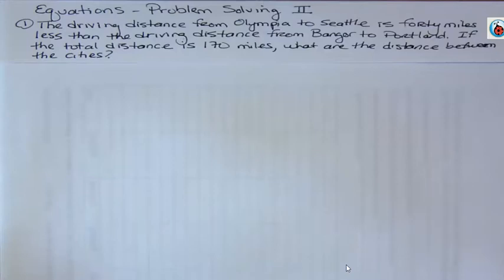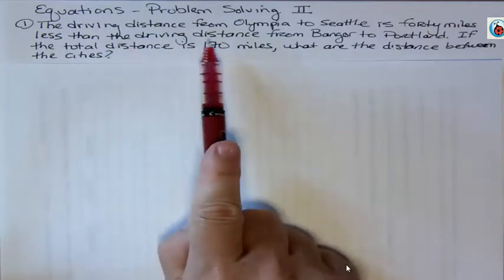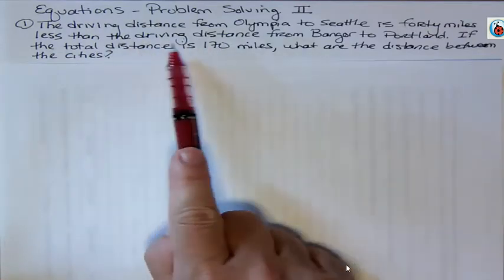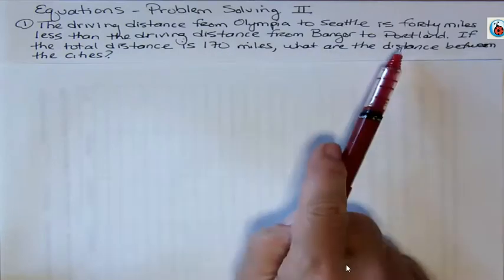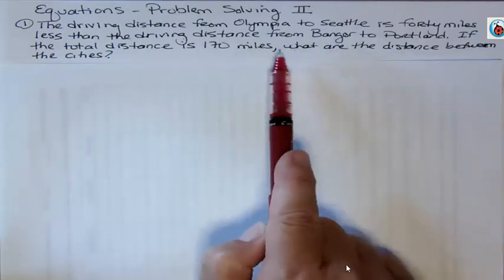Hello, it's Carly McAvoy. Today I'm doing problem-solving with linear equations. The first problem says the driving distance from Olympia to Seattle is 40 miles less than the driving distance from Bangor to Portland. If the total distance is 170 miles, what are the distances between the cities?